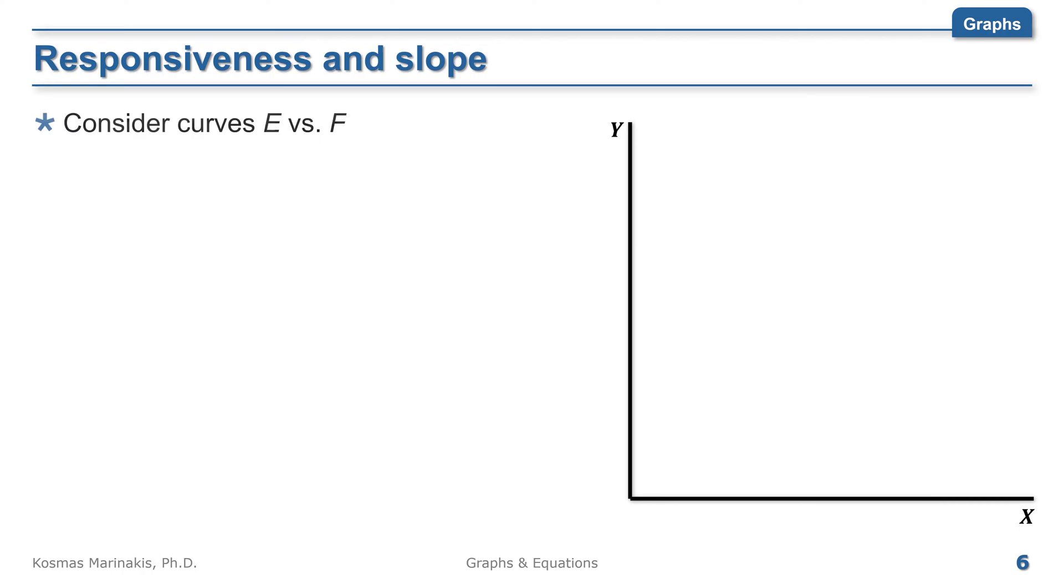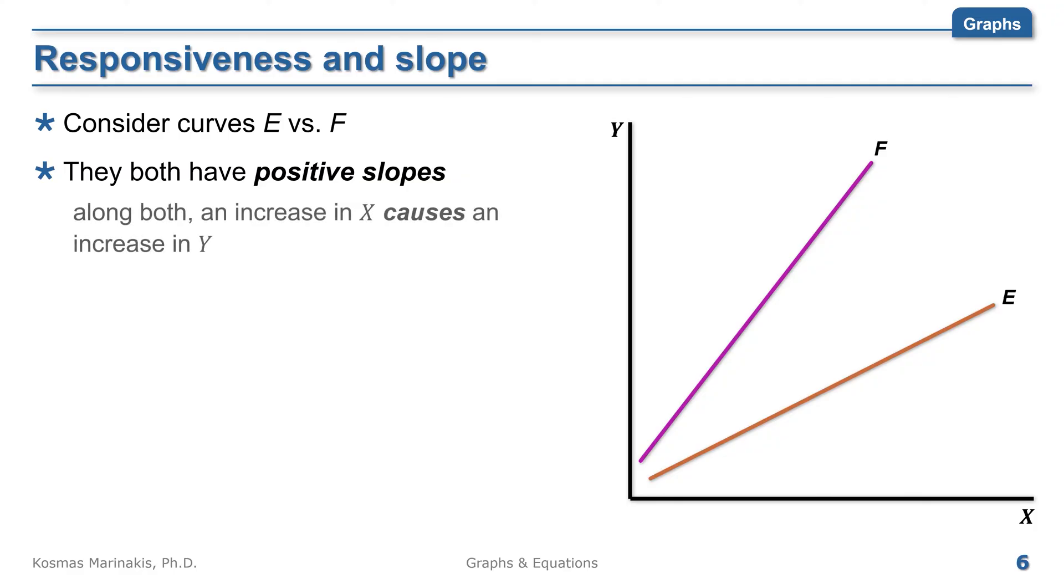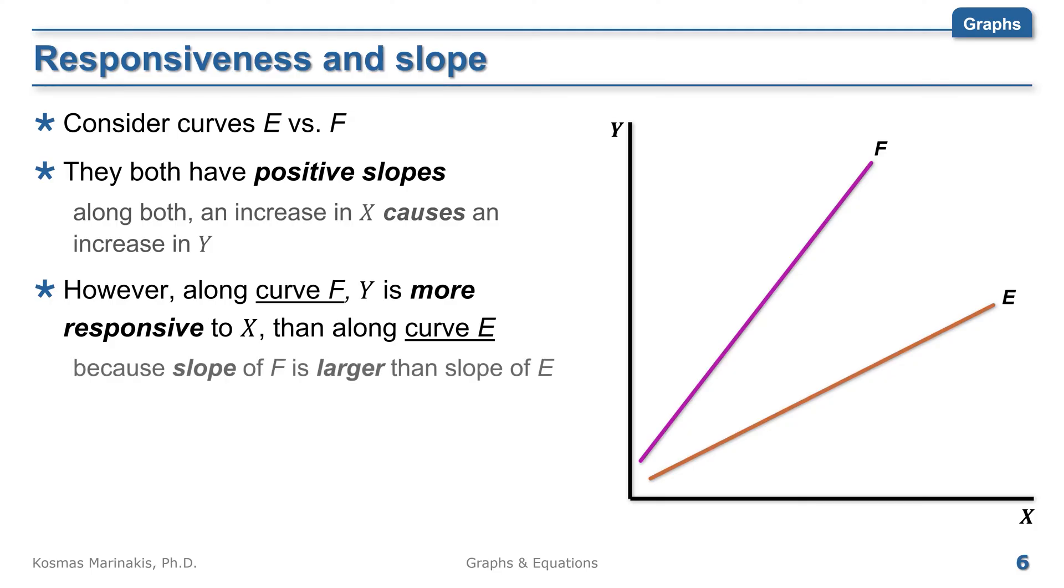Now consider curves E and F. They both seem to have positive slopes because along both of them, an increase in x causes an increase in y. However, along curve F, y is more responsive to x than along curve E. This is because the slope of F is larger than the slope of E, which entails that as x rises, y increases more along F than along E.